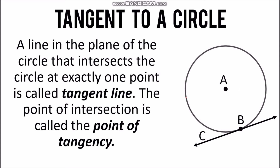So in circle A, we have line CB, and it intersects circle A at a certain point which is point B. Therefore, since it touches the circle once, line CB is the tangent line. The point of intersection, which is point B, is referred to as the point of tangency.